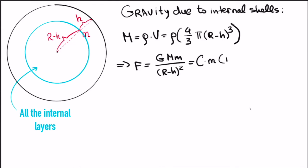Therefore, the gravitational force on the particle can be written as some constant c times m times r-h. We now make a very peculiar observation. A particle inside Earth performs a simple harmonic motion.